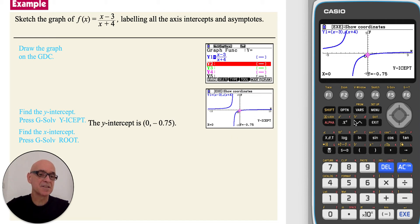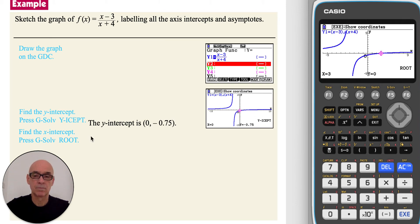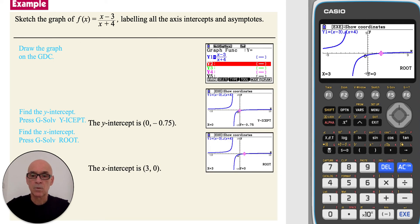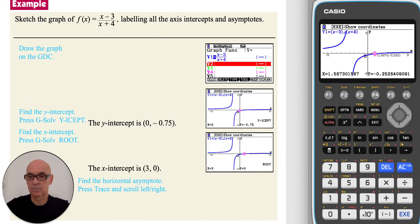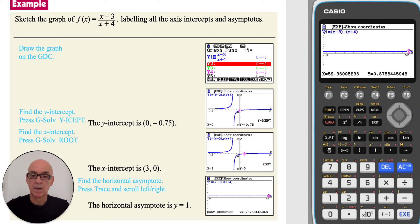To find the x-intercept, press F5 for G-Solve again, and this time press F1 for the root. We see that the x-intercept is 3. To find the horizontal asymptote, press F1 for Trace and scroll right repeatedly to see what the y value approaches. As x increases, y approaches a value of 1, so the horizontal asymptote is y equals 1.